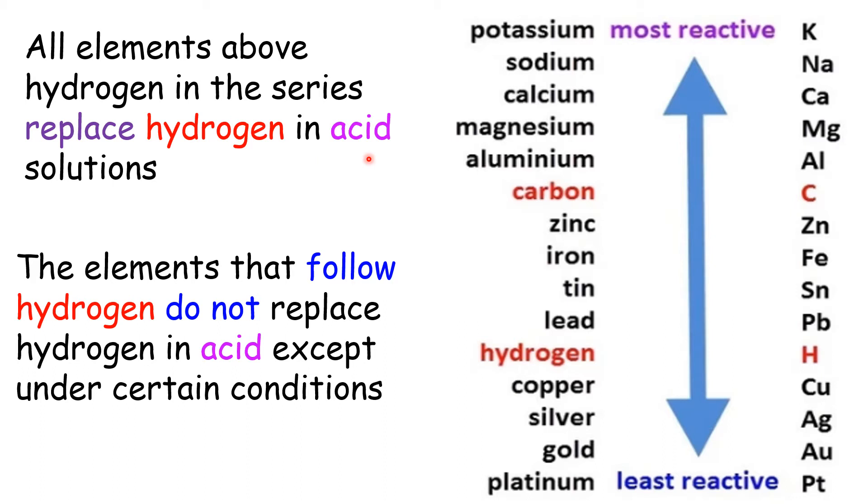The elements that follow hydrogen in the chemical activity series don't replace hydrogen in acid except under certain conditions. Copper, silver, gold, platinum - any of these don't replace hydrogen. The other metals can replace hydrogen. Carbon is a non-metal.